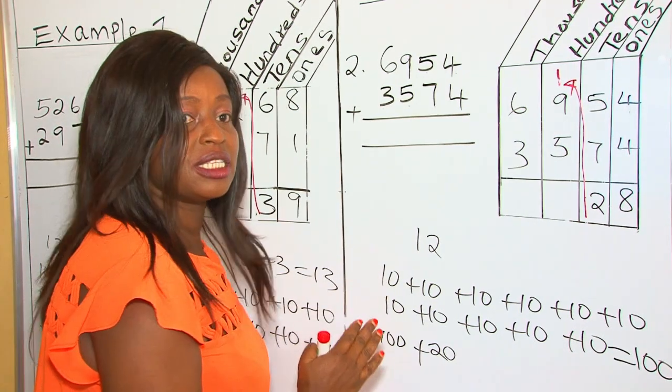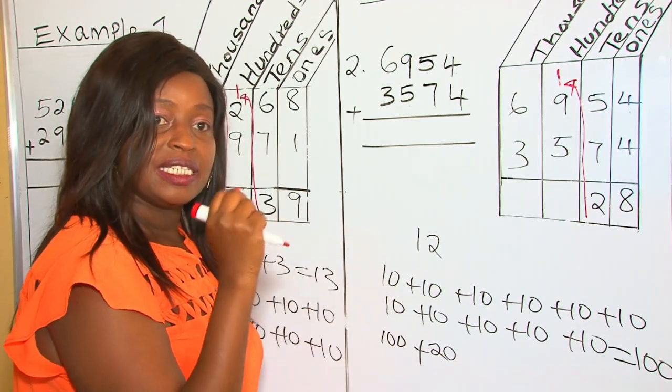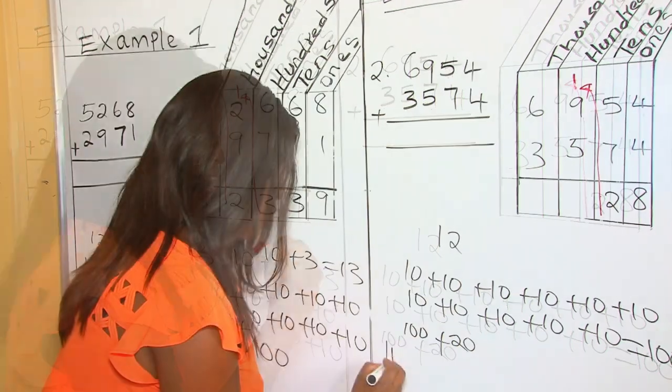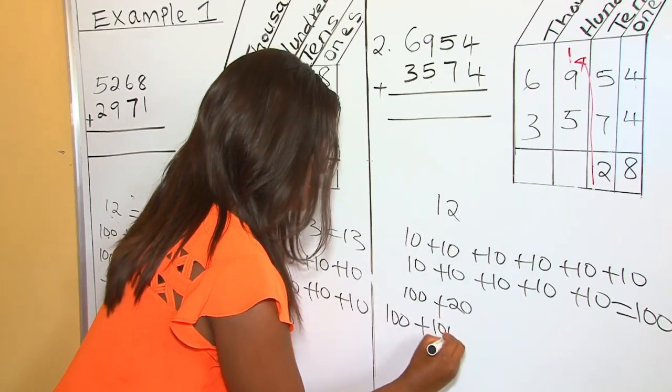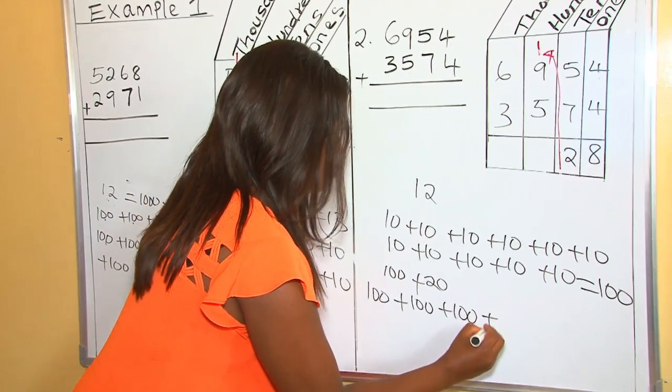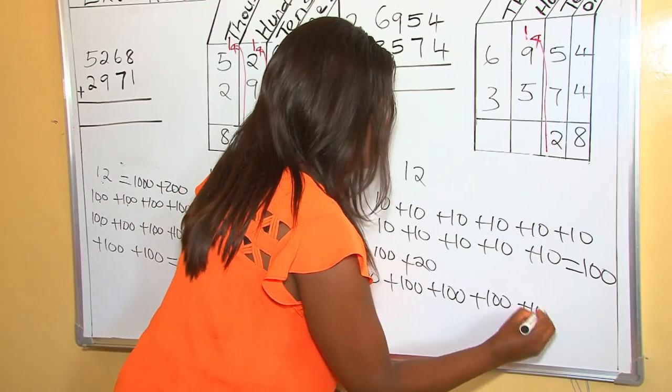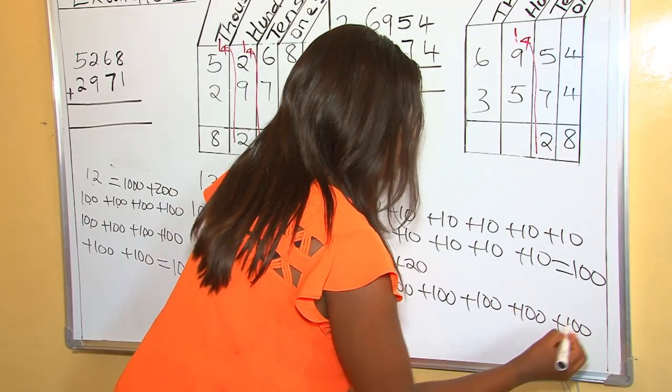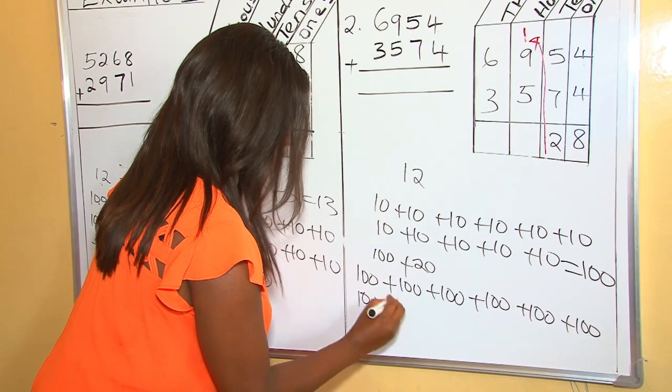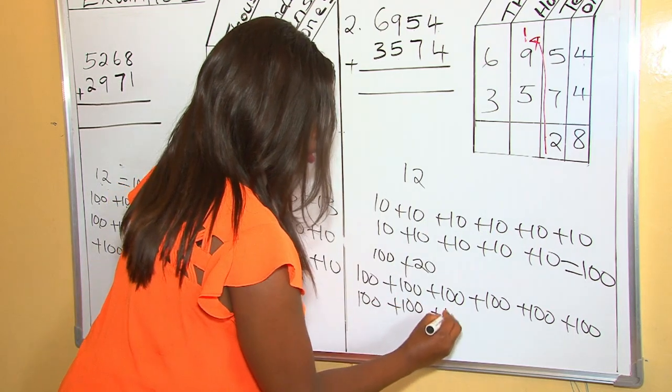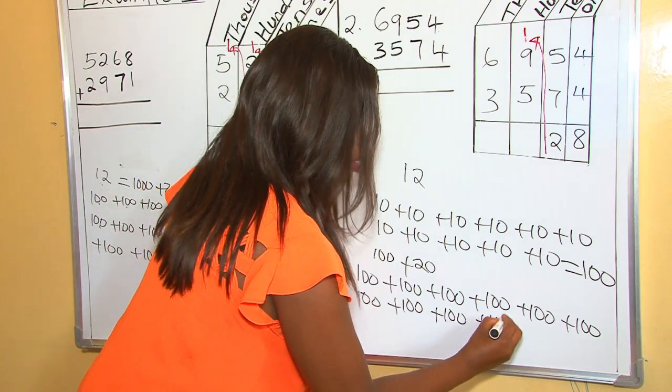So in 1500s, we have 10 hundreds. When we put together 10 hundreds,